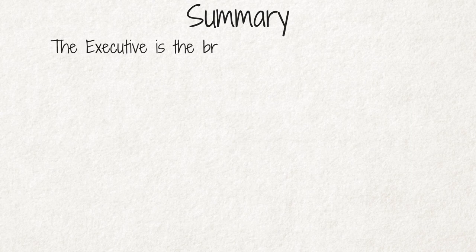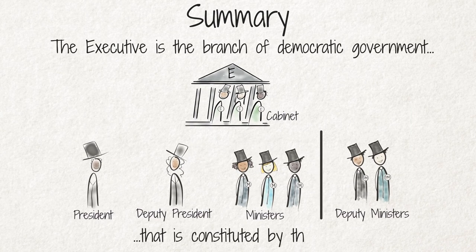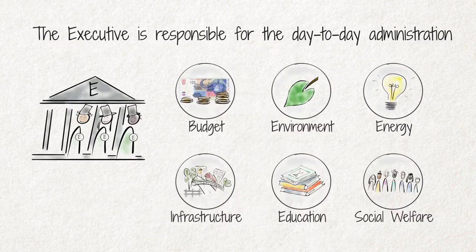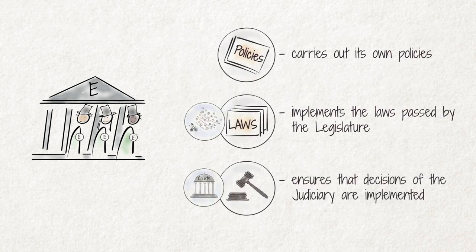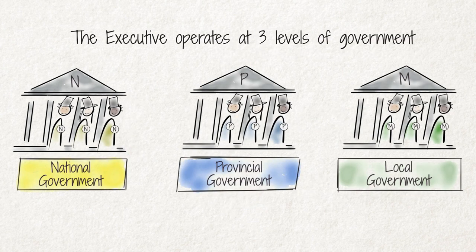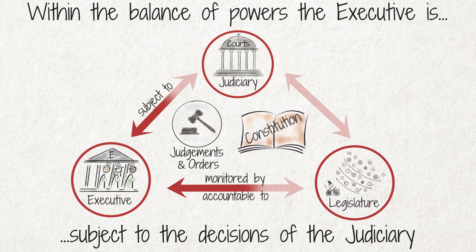Summary: The executive is the branch of democratic government constituted by the cabinet — the president, deputy president, and the ministers — and also the deputy ministers. The executive is responsible for the day-to-day administration and carrying out of national legislation and policies through the work of its departments. The executive operates at three levels of government: the national, provincial, and local level, all of which have executive authority in their own spheres. Within the balance of powers, the executive is accountable to and monitored by the legislature, and is subject to the decisions of the judiciary.